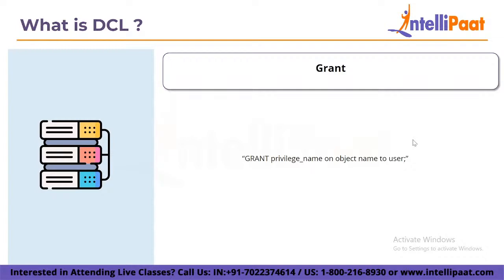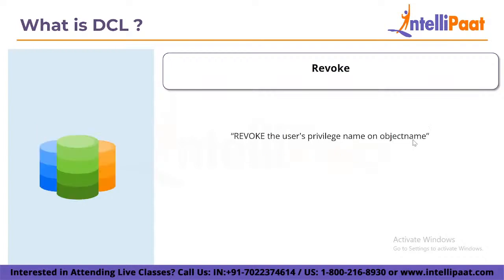The syntax for GRANT is: GRANT privilege_name ON object_name TO user. Here, SELECT, UPDATE, DELETE, INSERT, and ALTER are all privilege names. Table name is the object name, and the name of the user to whom we provide privileges is the user. Now let's look at REVOKE. REVOKE is used to deprive a user of permission. The REVOKE command allows the owner to revoke previously granted permissions. Its syntax is: REVOKE privilege_name ON object_name FROM user. Here SELECT, UPDATE, DELETE, INSERT, and ALTER are all privilege names. Table name is the object name, and the name of the user whose rights are being removed is the user.